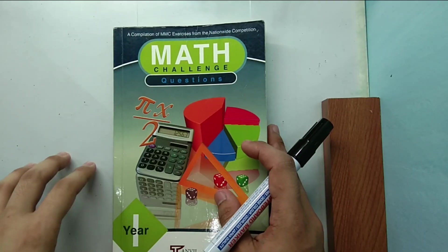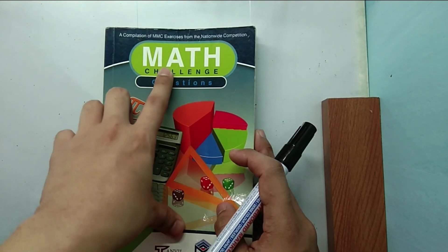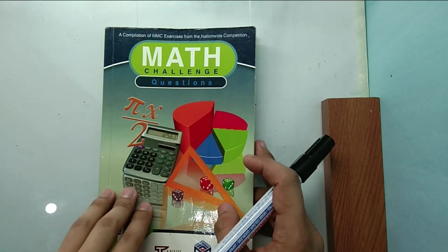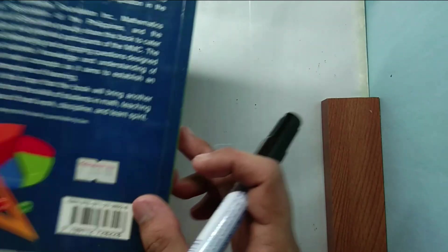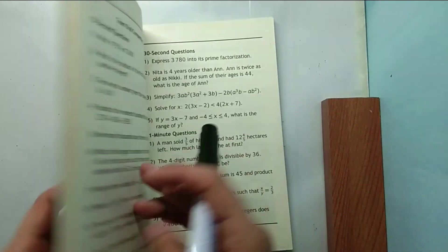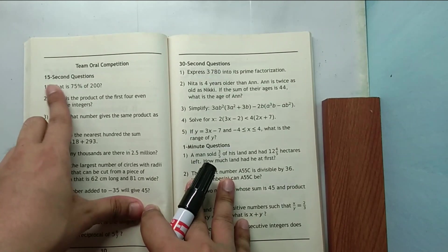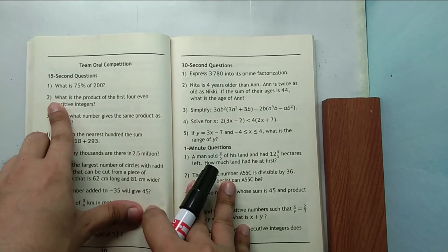Now time for our daily dose of math. The question will be from Math Challenge Questions booklet. You can buy this at the National Bookstore. Since the lesson I discussed earlier is about integers, let's try to answer a 15 second question item number two.